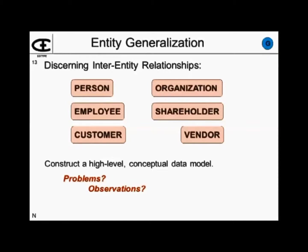If I defined it using those objects, these would all be separate. As soon as you see the commonalities — for example, do shareholders have names and addresses? Do employees? Do customers? Do persons? Yes. You recognize that commonality and you want to handle it, and the way you do that is through generalization.